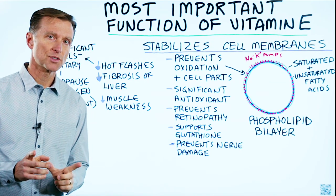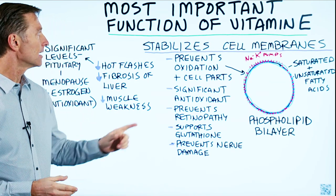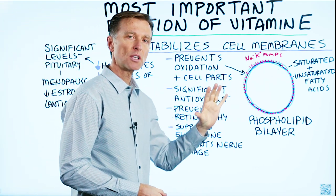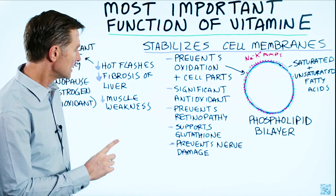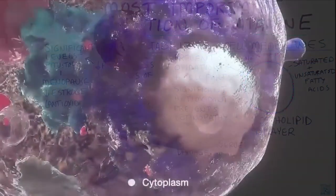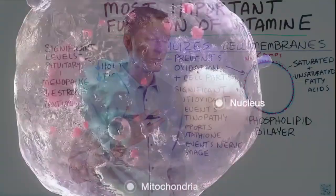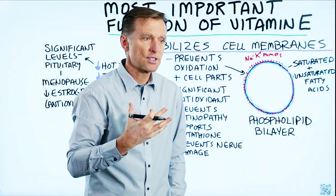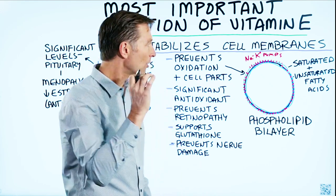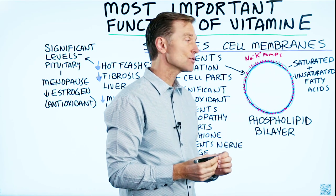Let's talk about the most important function of vitamin E, and that is it stabilizes cell membranes. What's interesting about the cell membrane is that it has a double layer of fat, both saturated and unsaturated fatty acids. People are always concerned about saturated fat and avoiding it, but the cell membrane is actually made out of saturated fat and cholesterol.